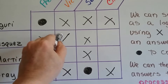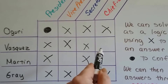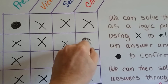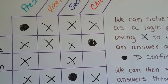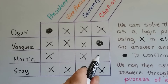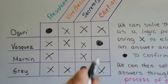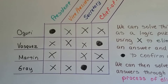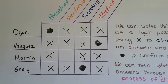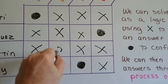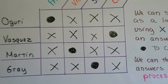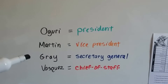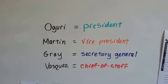There's only one thing Vasquez can be now, and that's Chief of Staff — that's the only box that's open. So we put a dot there: Vasquez is Chief of Staff. If he's Chief of Staff, then Martin is not Chief of Staff, so we put an X there. That tells us Martin has got to be the Vice President through process of elimination. So what we end up with is: Oguri is the President, Martin is the Vice President, Gray is the Secretary General, and Vasquez is the Chief of Staff.